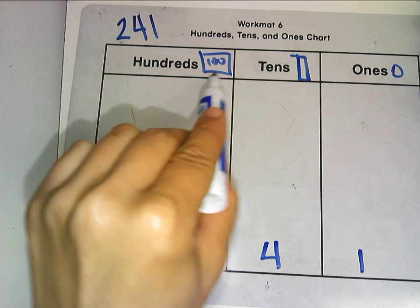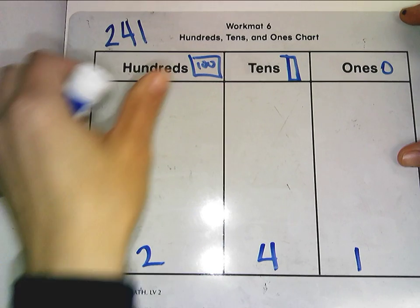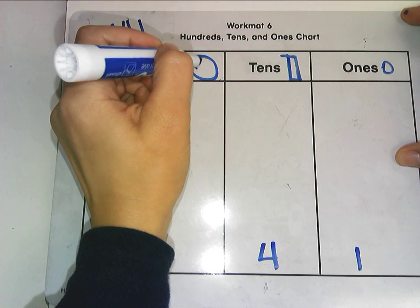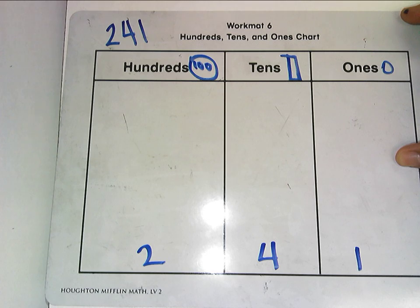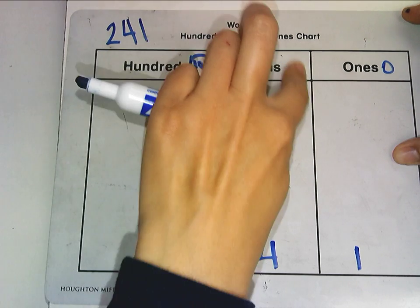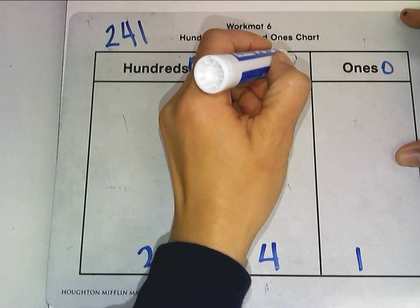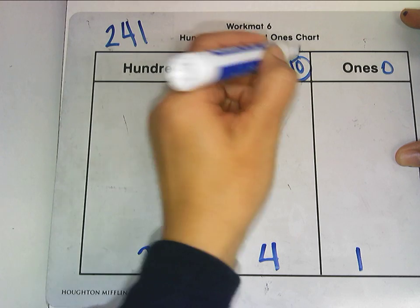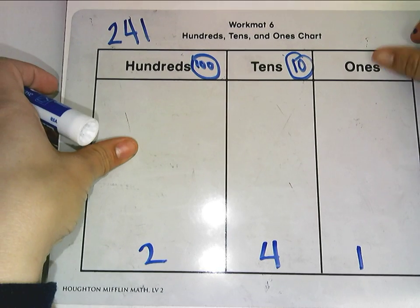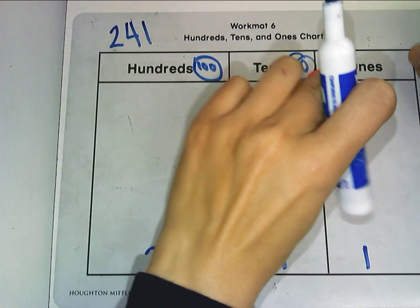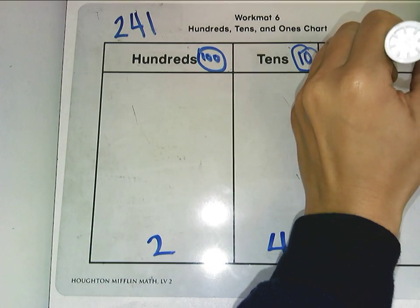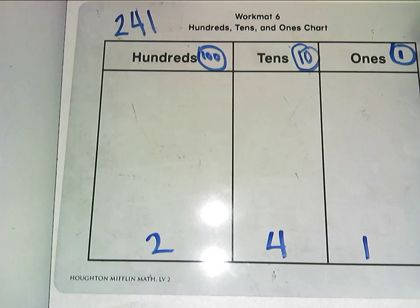Instead of sketching the blocks, you're now going to sketch disks — kind of like a circle with the value written inside. Instead of a block, you draw a circle and write a 10 inside. So it's just a circle with a value in it, similar to the disk. A 1 will look like that too.